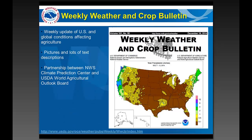One source to point out, especially as we get into spring months, is the Weekly Weather and Crop Bulletin — a link is included in the presentation. This is a weekly update of agriculture conditions not just in the United States but globally. They can be vague for specific locations, but if you're trying to get a feel for what's going on elsewhere in the country or world, or get a sense of where prices might be going, this bulletin can help you keep up with areas that are doing well or getting impacts from dryness. It's a partnership between the Weather Service's Climate Prediction Center and the USDA World Agricultural Outlook Board, updated once a week.